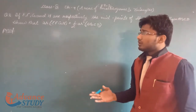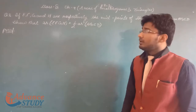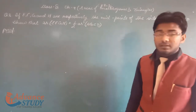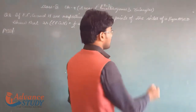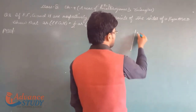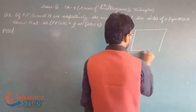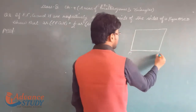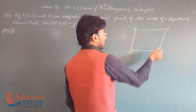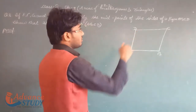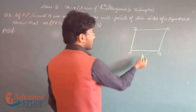We are doing question number 2. First, draw the figure. E, F, G, H are the midpoints of the sides. Mark the midpoints E, F, G, H on the figure. After EFGH, these are respectively midpoints of sides AB, BC, CD, and DA.